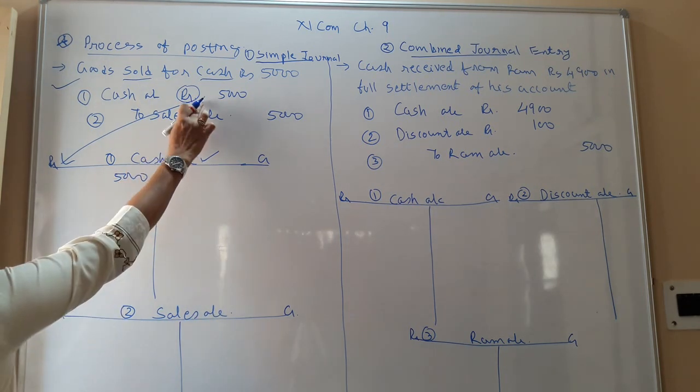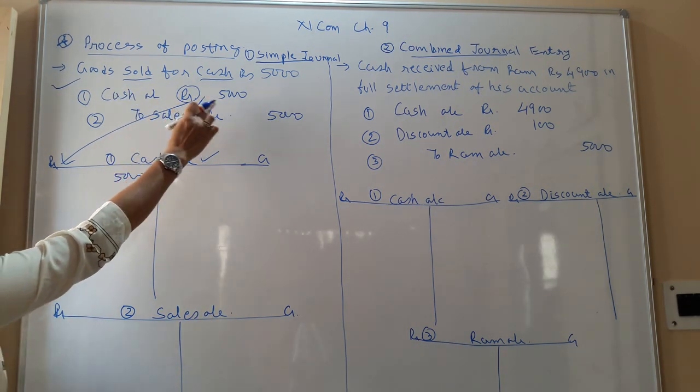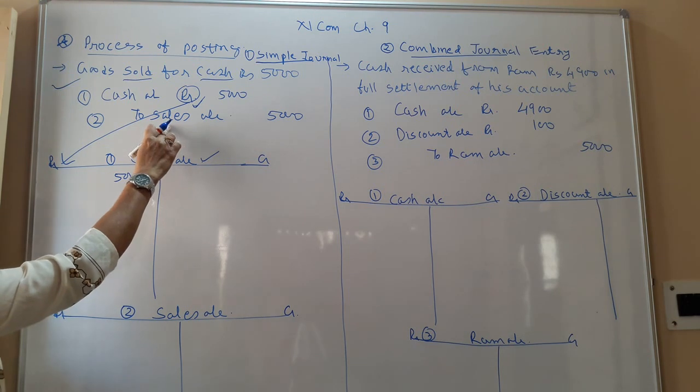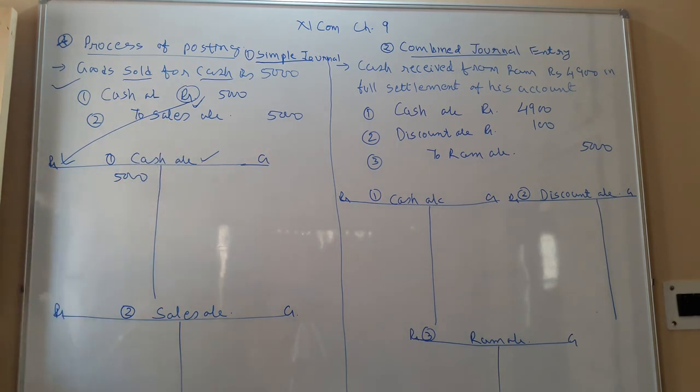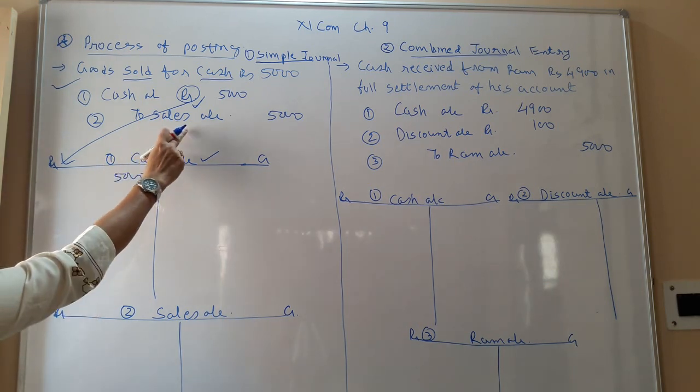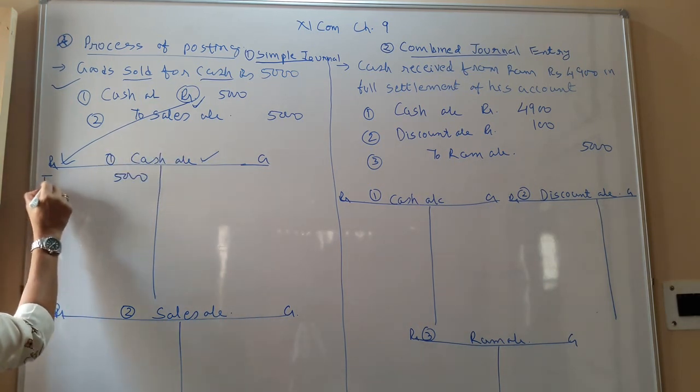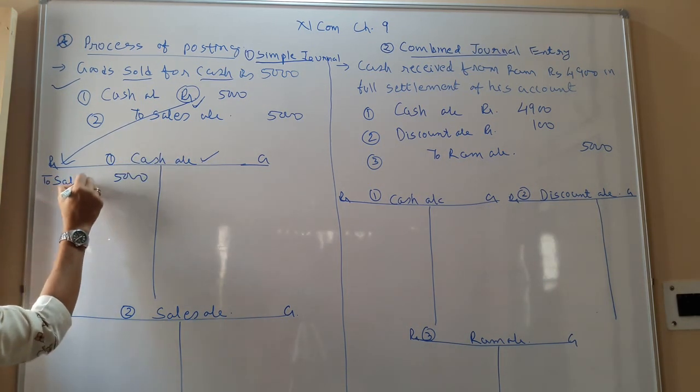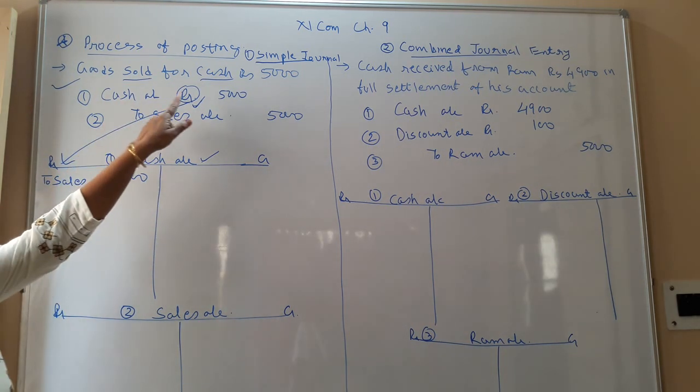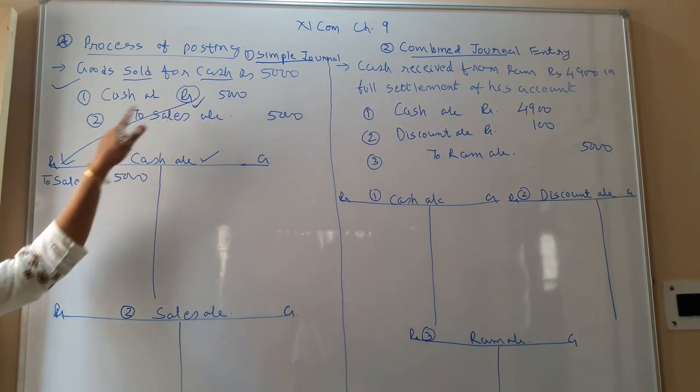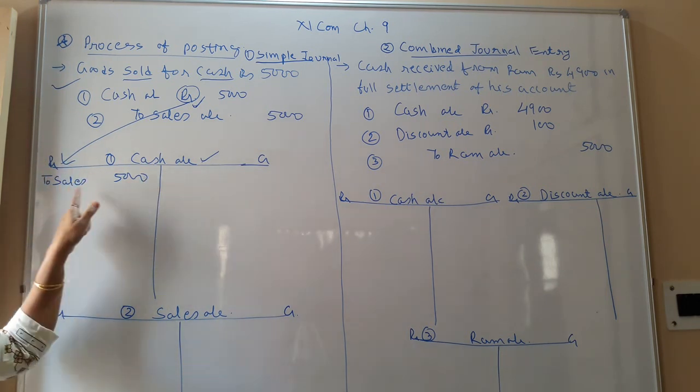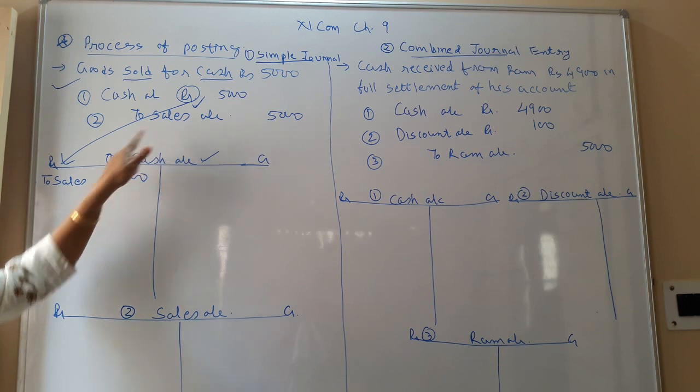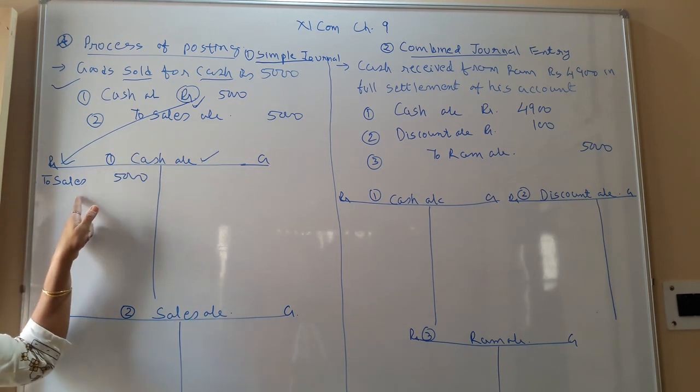So 5,000 is the amount. Now when you do the posting, the opposite account - cash has come in the business. Why has the cash come? The reason is sales. So here to be returned: to sales. So what you have understood? The respective account on the debit side means go to the debit side of that respective account and the opposite fold of the journal to be returned in particular.